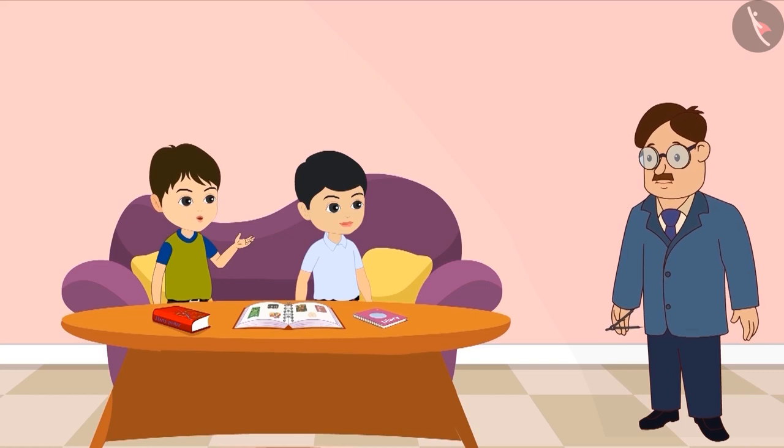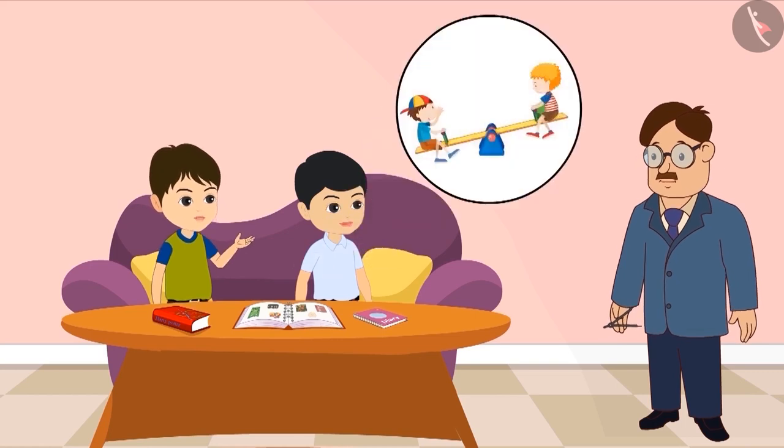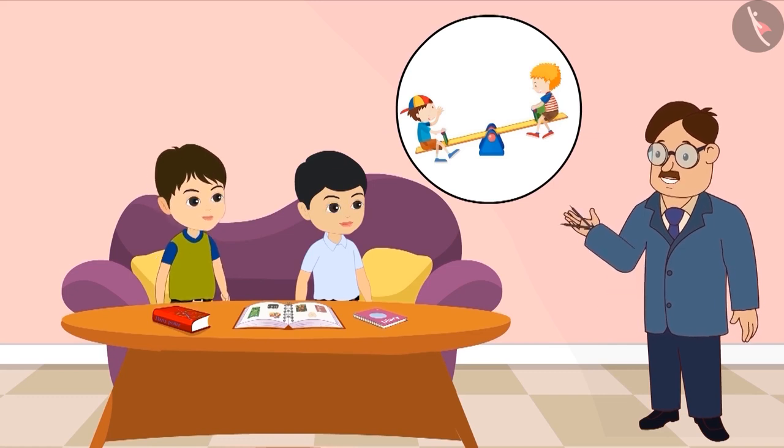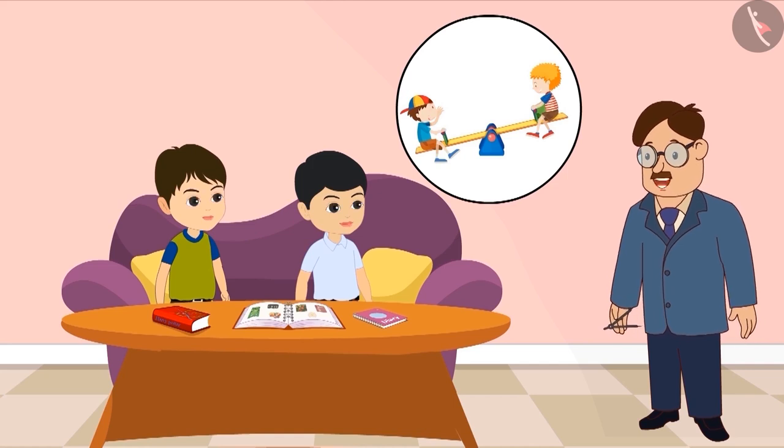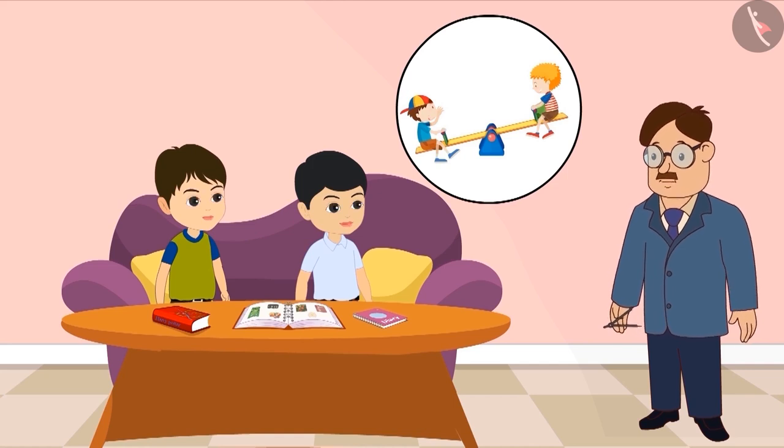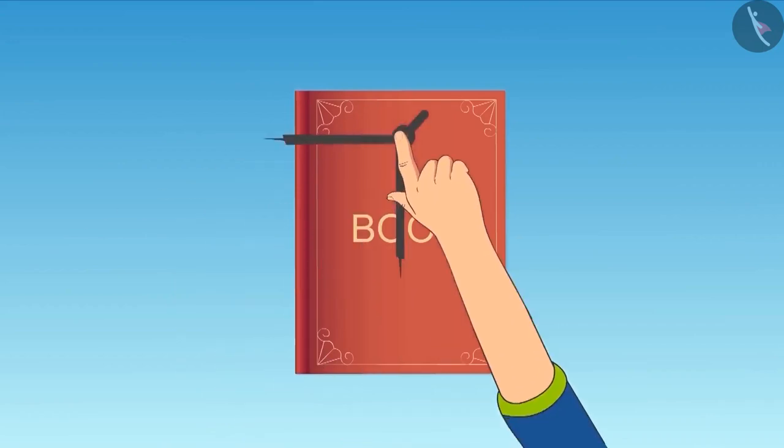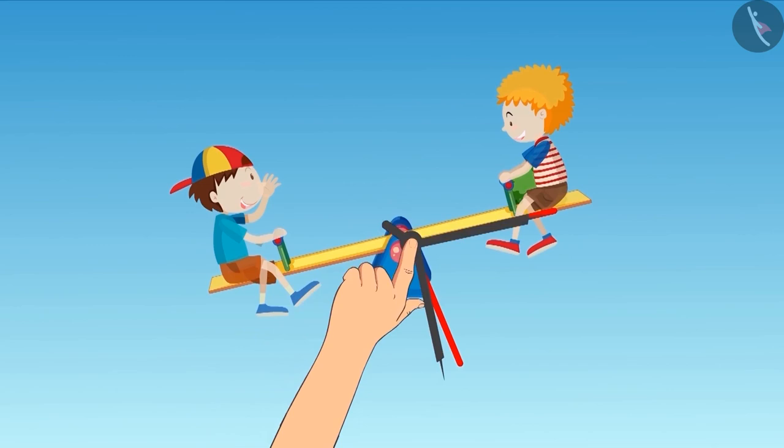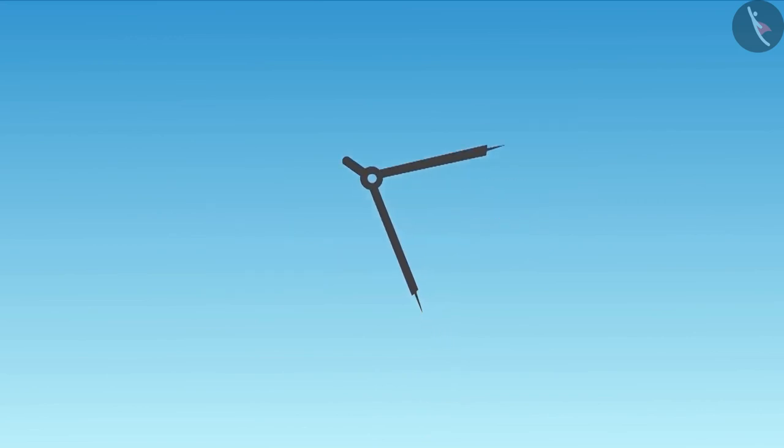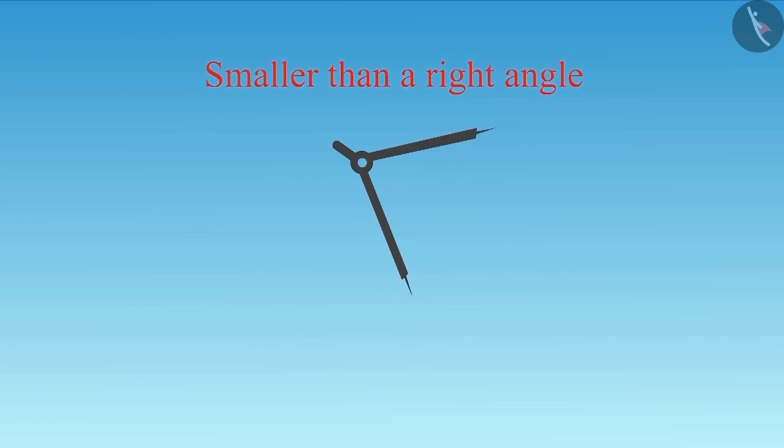So, can we identify the angle of the seesaw given in this picture with the help of this divider? Yes. Why not? To identify the angle in this picture, we will place the divider this way. See, the divider was as open as the measurement of the right angle before. Then to measure this angle, we had to slightly reduce the distance between the two sides of the divider. This means that this angle is smaller than a right angle.